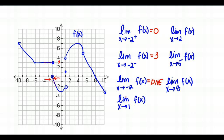Now let's move on to the limit as X approaches 1. As I approach 1 from the left side, the function approaches negative 2, and as I approach 1 from the right side, I get closer and closer to 4. Since negative 2 and 4 are not equal, there's a jump happening here, so the limit as X approaches 1 of f of X also does not exist.